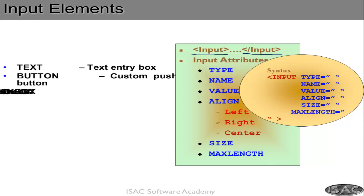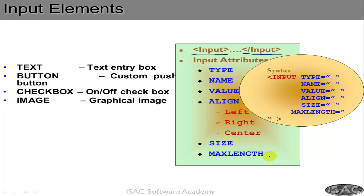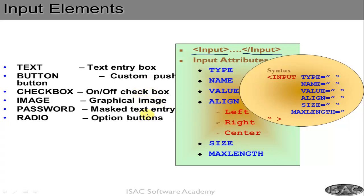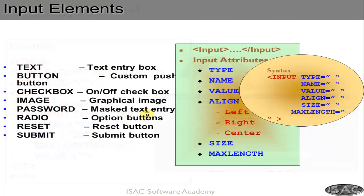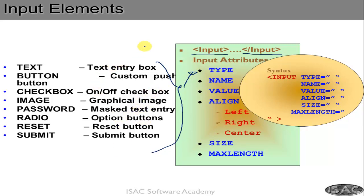The input element type can be: button (custom push button), checkbox, image, password, radio, reset button, or submit button. All of these are values of the type attribute. These are the various types of input elements you can use inside a form.